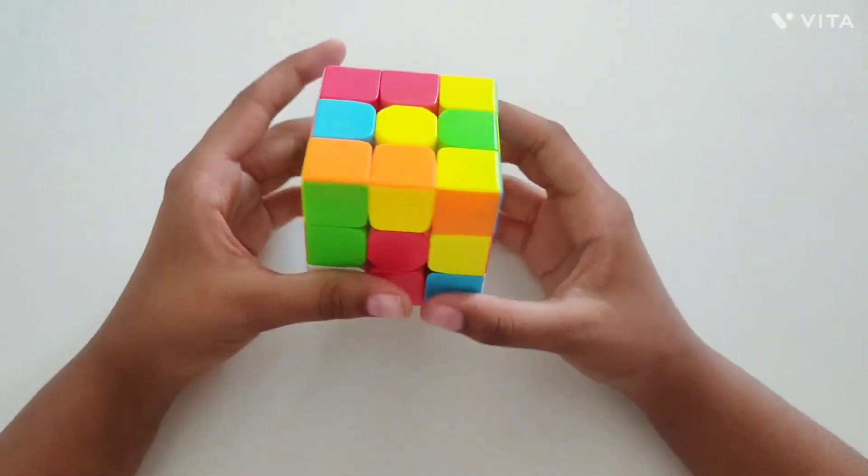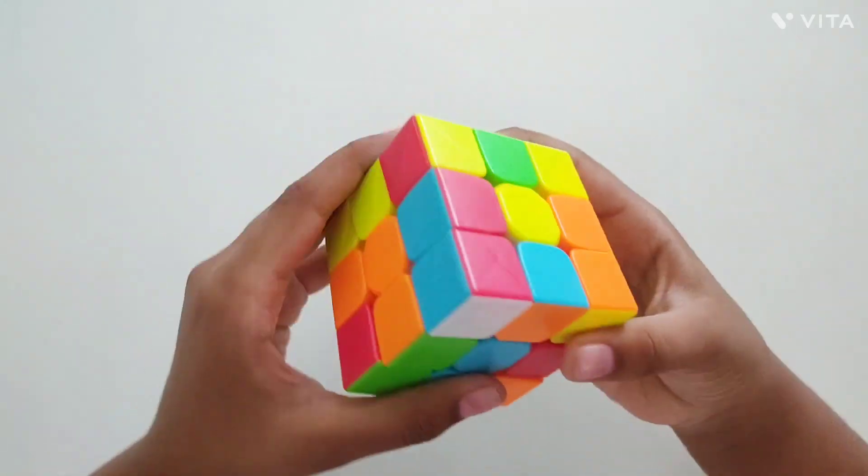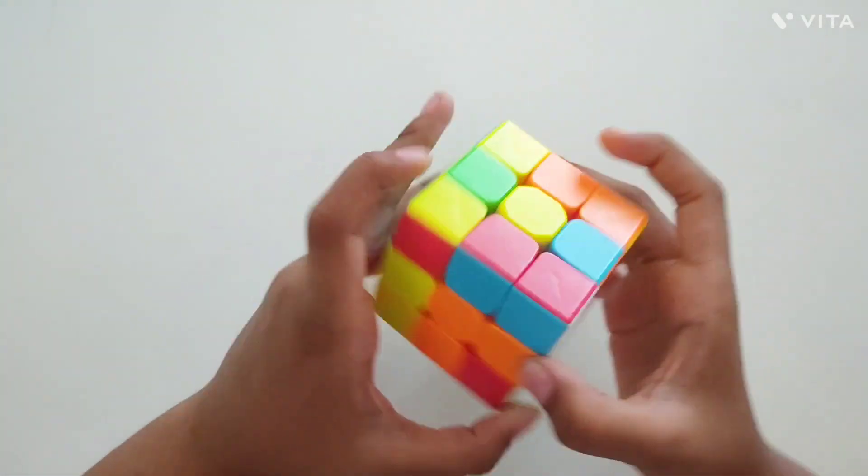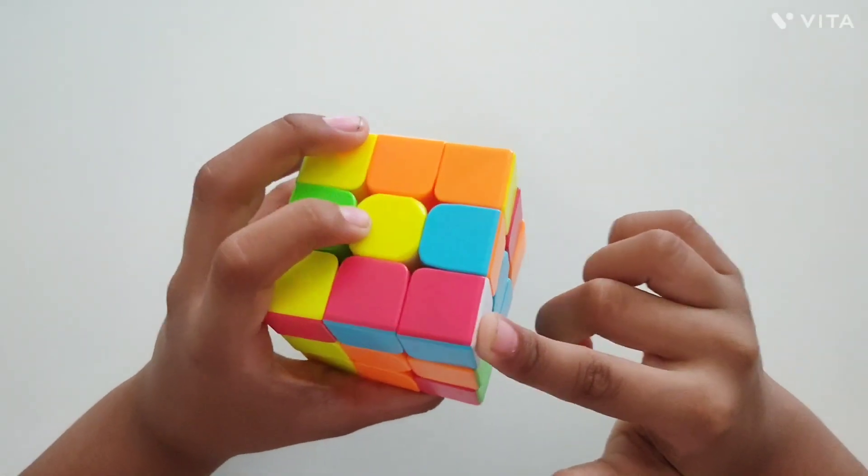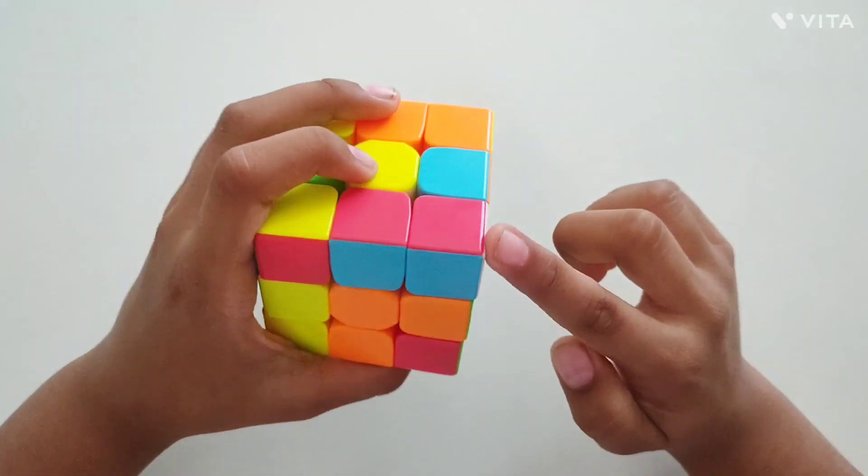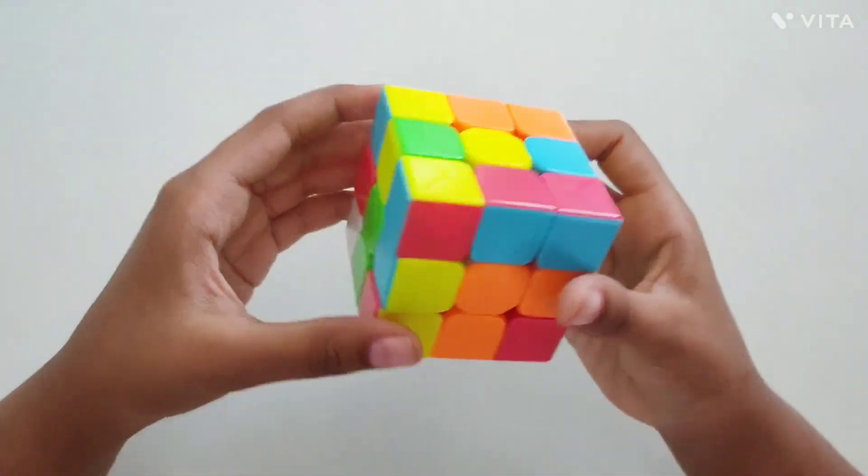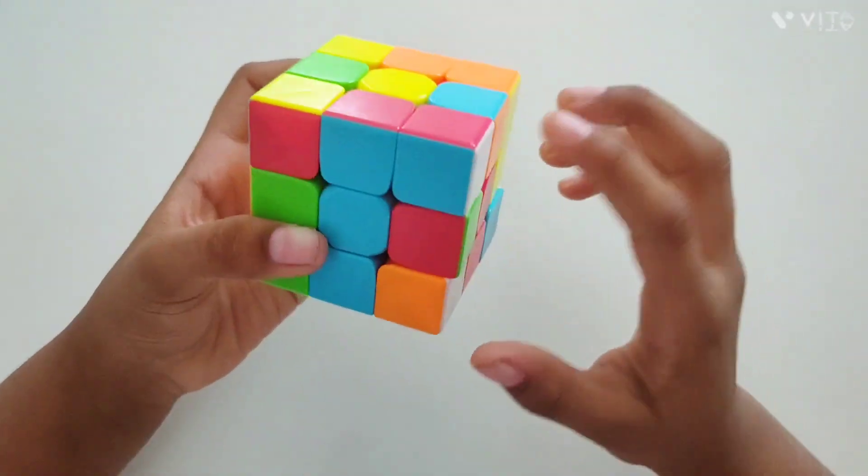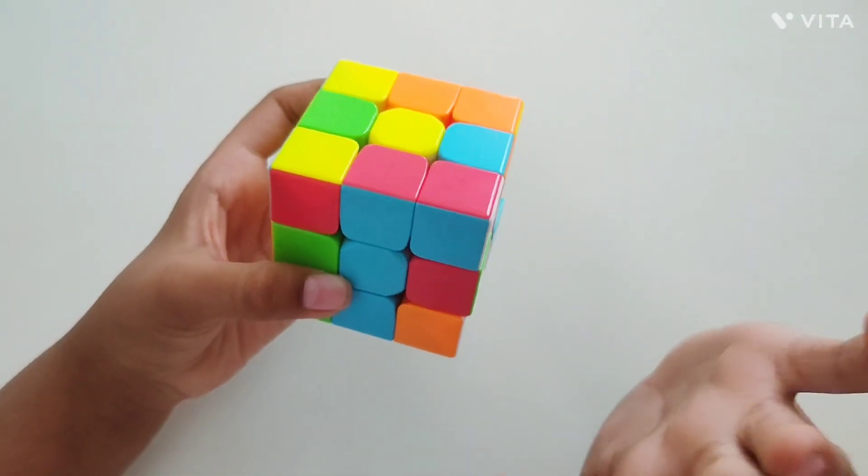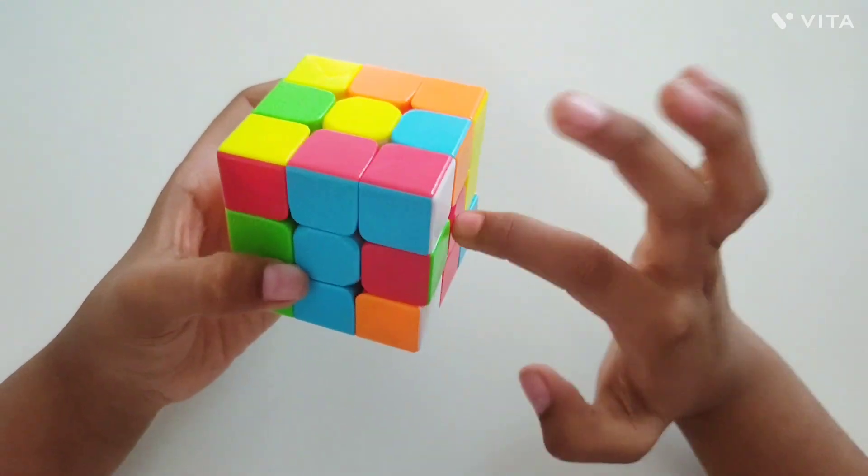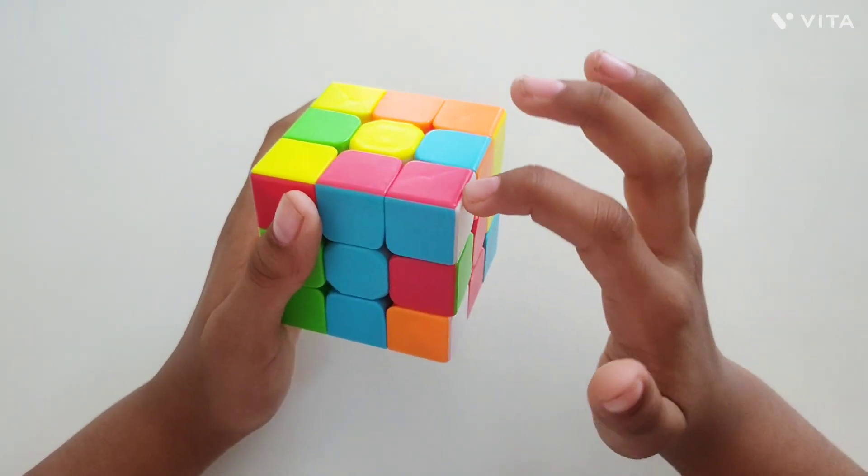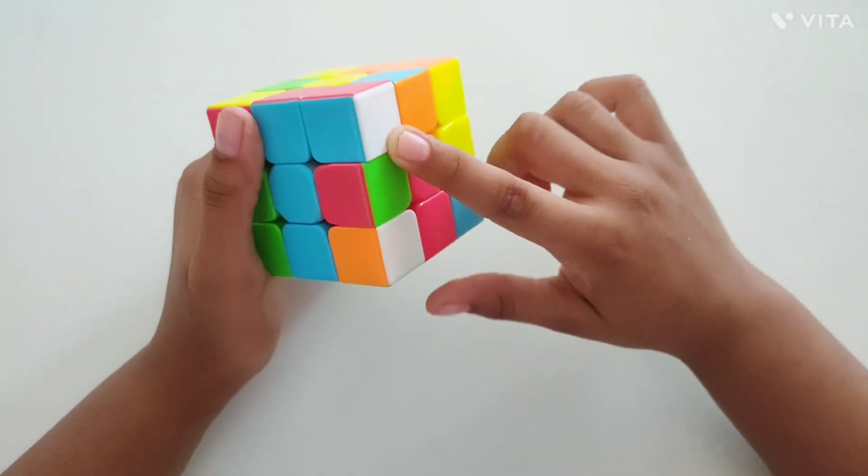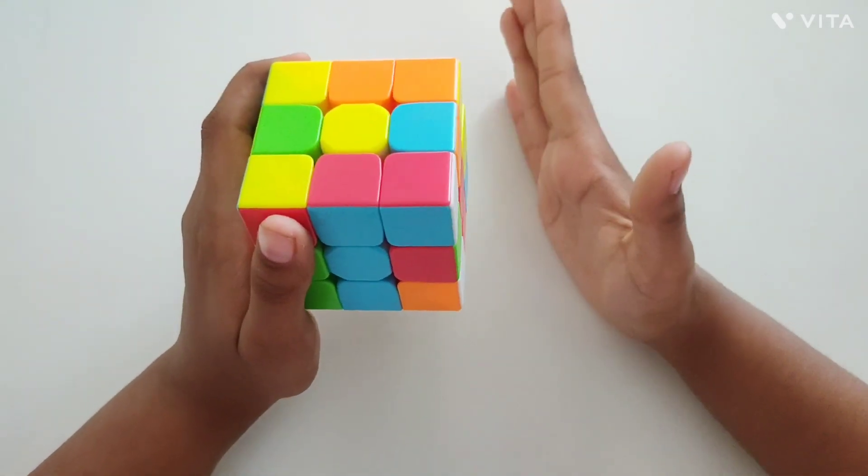Now we have to see the white corner pieces like this. Let's see what's the color of this corner piece. Oh, red and blue. Now let's take it to red and blue. Red here, blue here. Red here, blue here. White. Now it's in my right side.